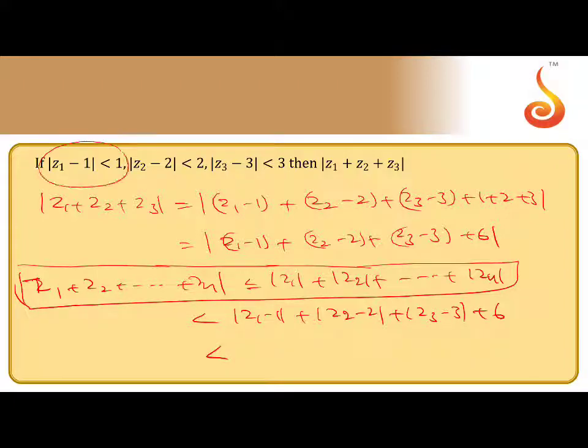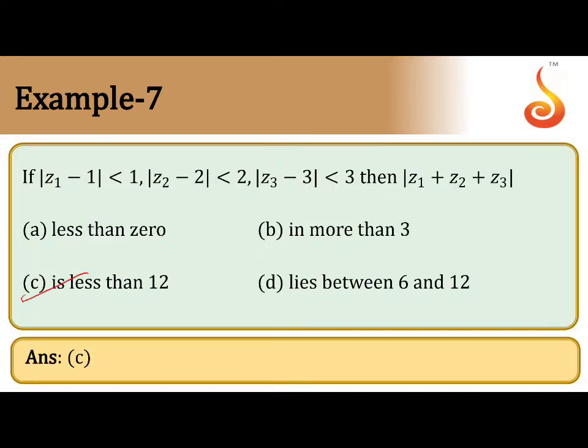What they are given, modulus of z1 minus 1 is less than 1. This is less than 1 plus 2 plus 3 plus 6, less than 12. Therefore, modulus of z1 plus z2 plus z3 is less than 12, which is the answer.